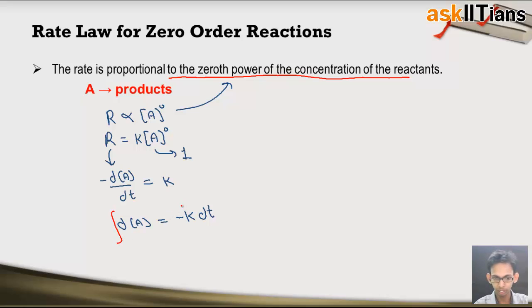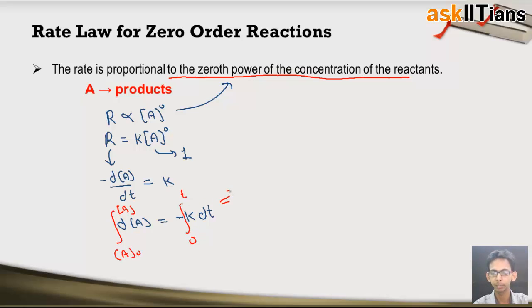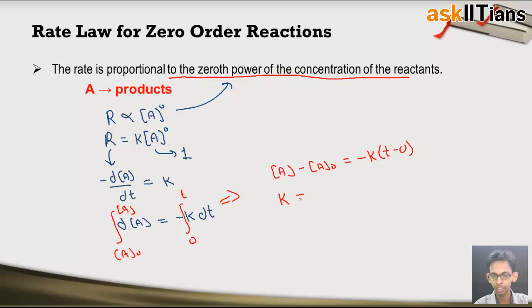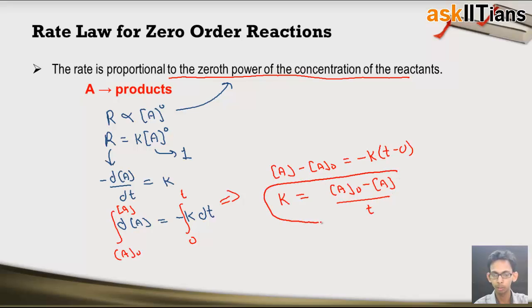Integrating both sides over a period from A₀ to A (initial to final concentration of A) and from zero to T, we get A minus A₀ is equal to minus KT. Rearranging, K is equal to A₀ minus A divided by T. This is the most famous form of the integrated rate law for zero order reactions.